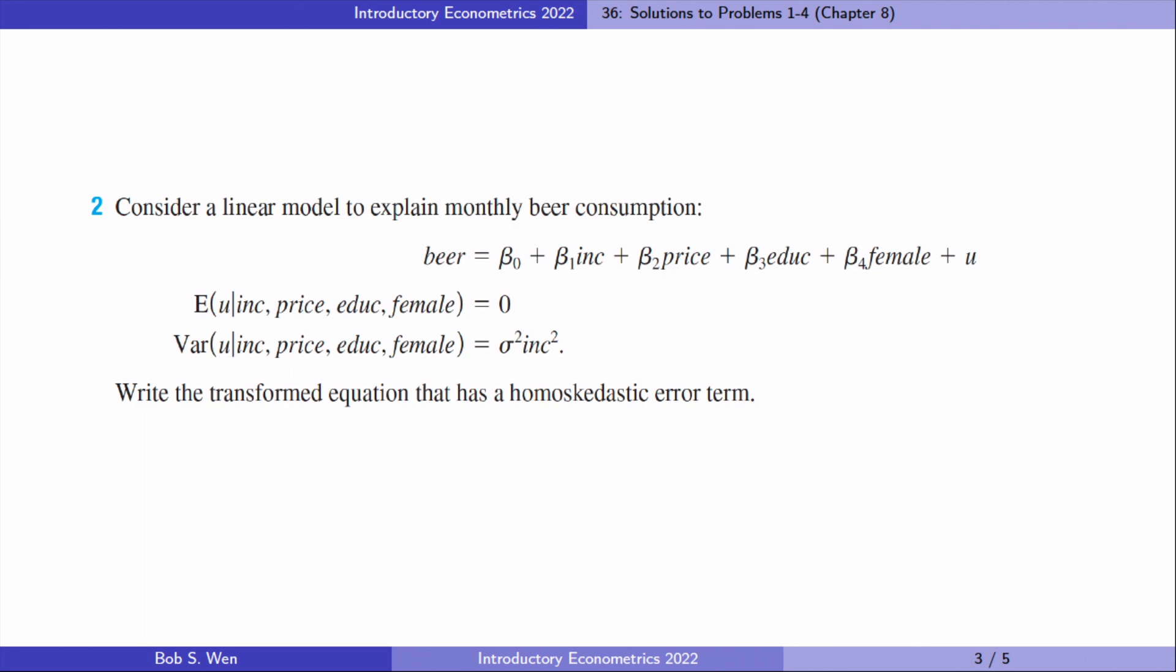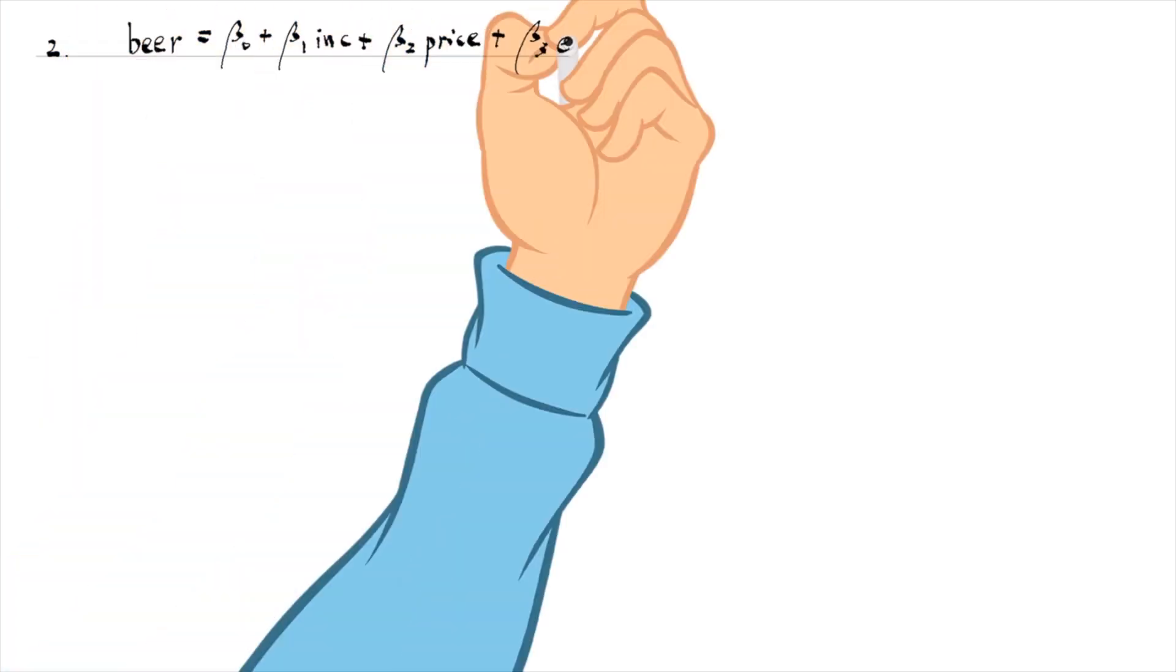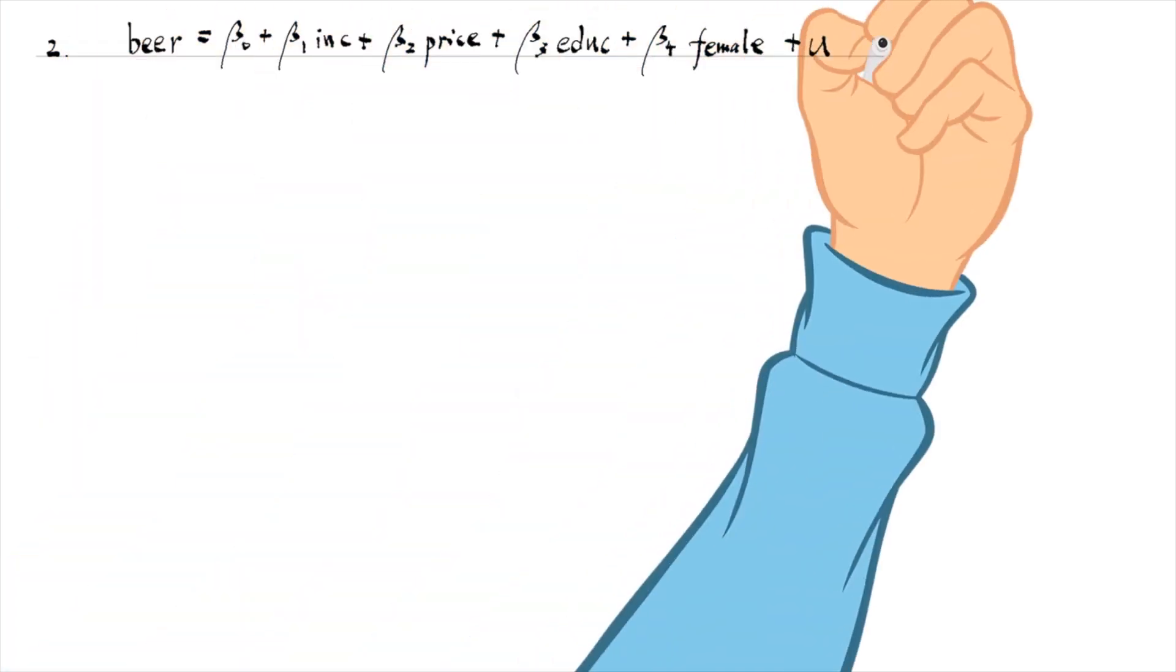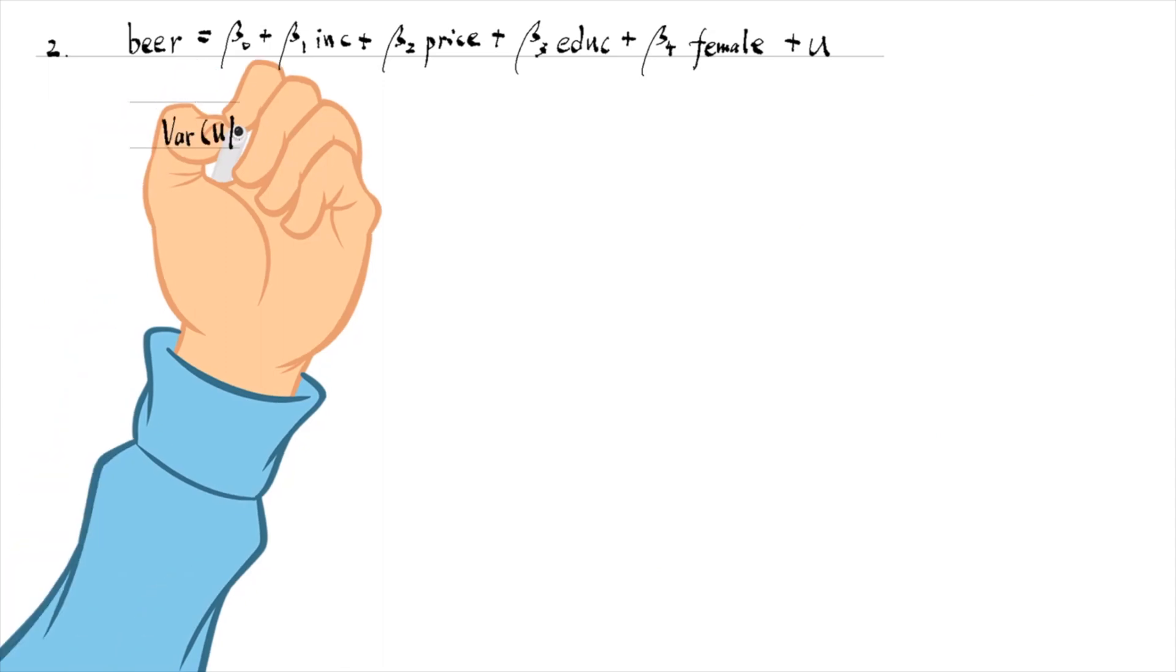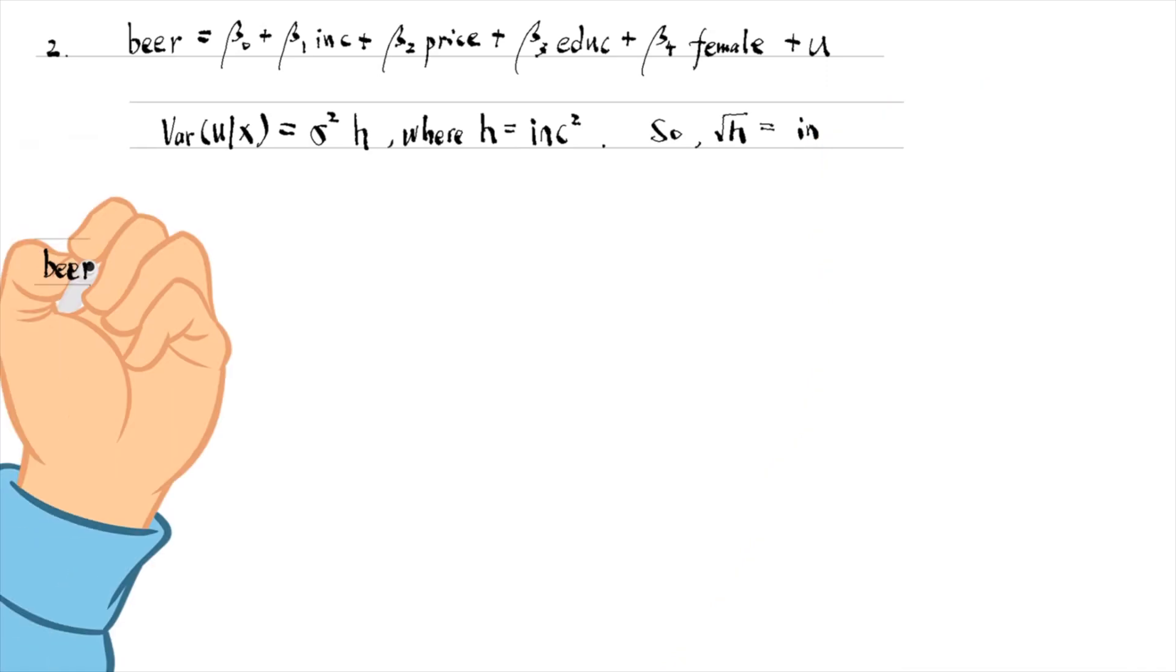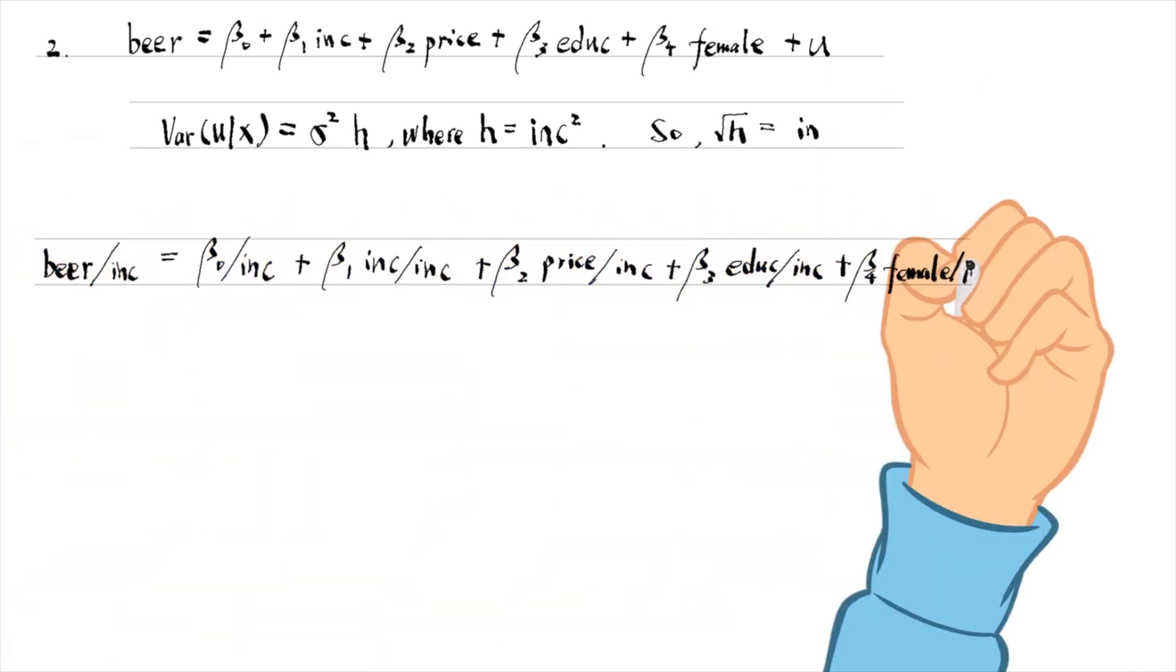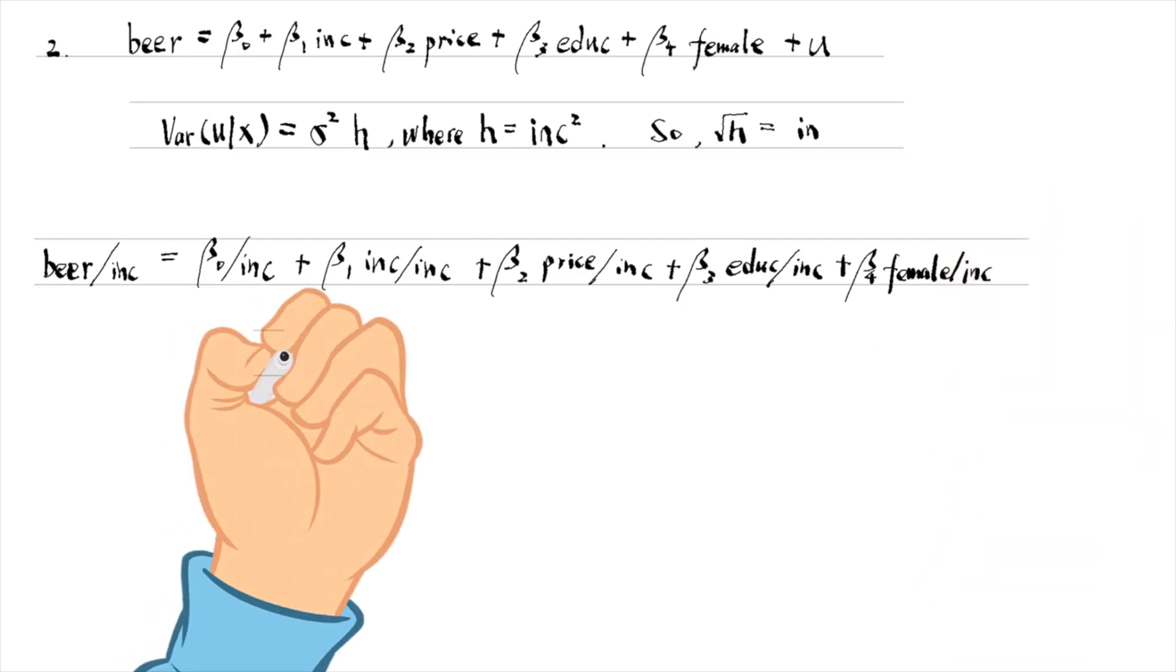Let's solve problem 2. The variance of the error term can be written as sigma squared times H, where H equals income squared. So, the square root of H equals income. We divide the original equation by income to get the transformed equation.